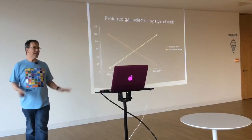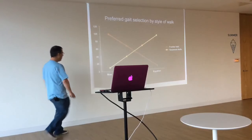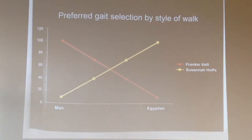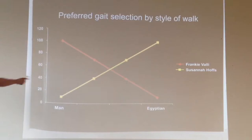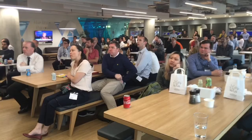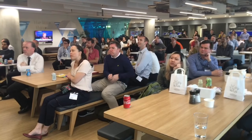Here's one. You can criticize this in all sorts of ways — why have you got a line graph going between 'man' and 'Egyptian'? That makes no sense. Where's my numbered scale? What does 'preferred gait selection' mean? Never mind that — it's fun, it's a joke, it's a riddle. You'd be looking at it: oh, I see — Susanna Hoffs, the Bangles, 'Walk Like an Egyptian.' Frankie Valli, 'Walk Like a Man.' So in a way it's like a puzzle. Do you understand my references, and can you understand this in a data visualization context like that? I had a lot of fun with that.